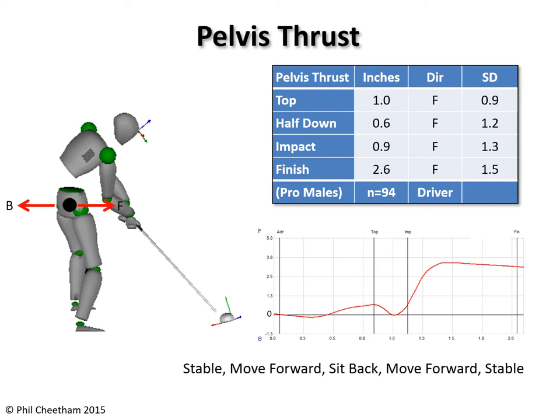Here is a typical tour player's graph of pelvis thrust with a driver and a table with values from our tour database. This is from 94 male tour players on either the PGA Tour or the European Tour. In the graph, the vertical axis is pelvis thrust in inches, the horizontal axis is time in seconds, and the black horizontal line is the zero thrust value.